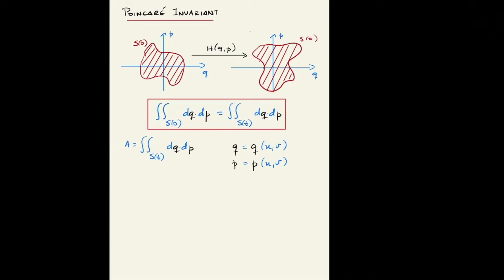So instead of writing dQ dP, which are vectors, we write them in terms of the Jacobian and the derivatives of U and V, where the definition of the Jacobian is the determinant of the matrix of derivatives.